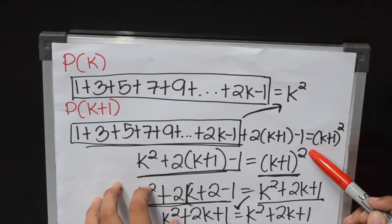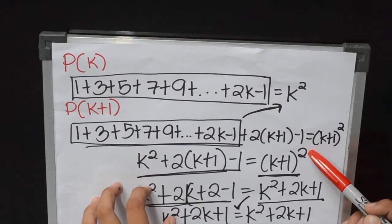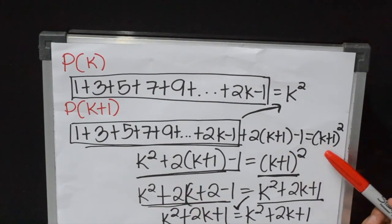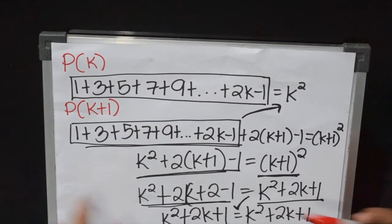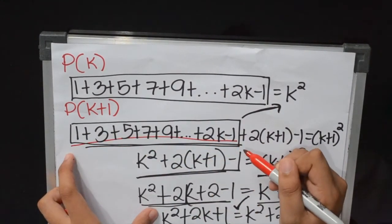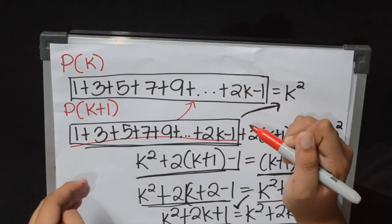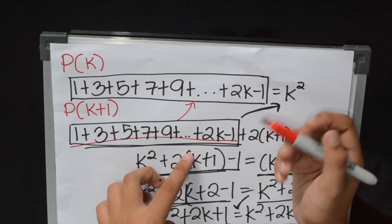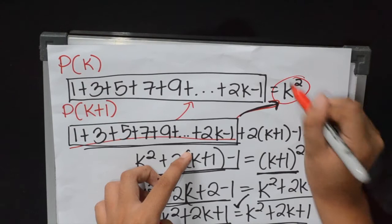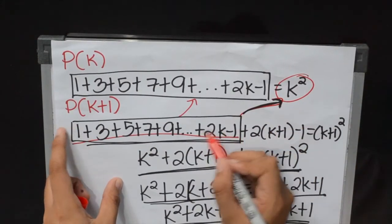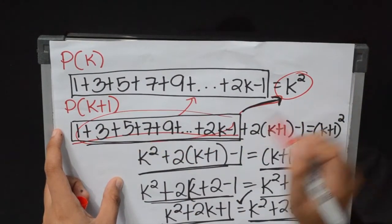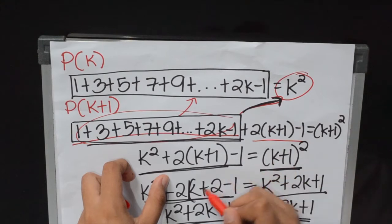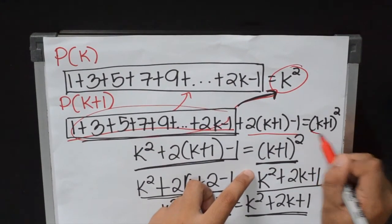Having this equation: 1 plus 3 plus 5 plus 7 plus 9 plus (2k minus 1) plus 2(k+1) minus 1 equals (k+1) squared. We can observe that the part '1 plus 3 plus 5 plus 7 plus 9 plus (2k minus 1)' is similar to the induction hypothesis. So since they are similar, we can substitute that part of the equation with k squared.